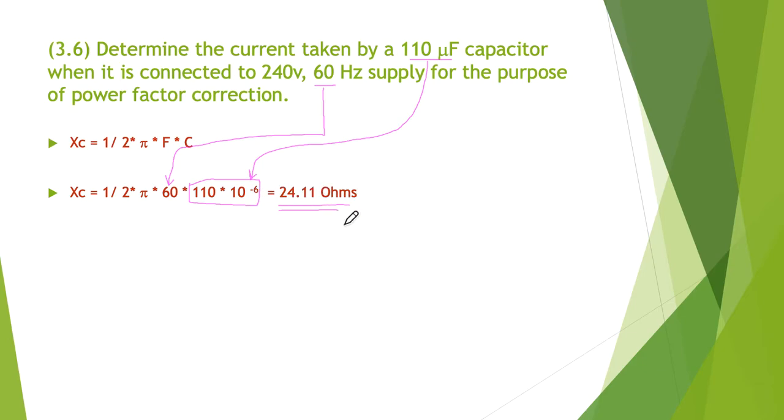Now we're down to simple ohms law, we have the voltage. The current through the capacitor is the voltage across the capacitor divided by the xc or the capacitive reactance, so we end up with 240 volts divided by 24.11 equals 9.95 amps. That's the amount of current. Two steps: we had to find out the xc for the capacitor and then determine the current through the capacitor for a 240 volt 60 hertz supply.